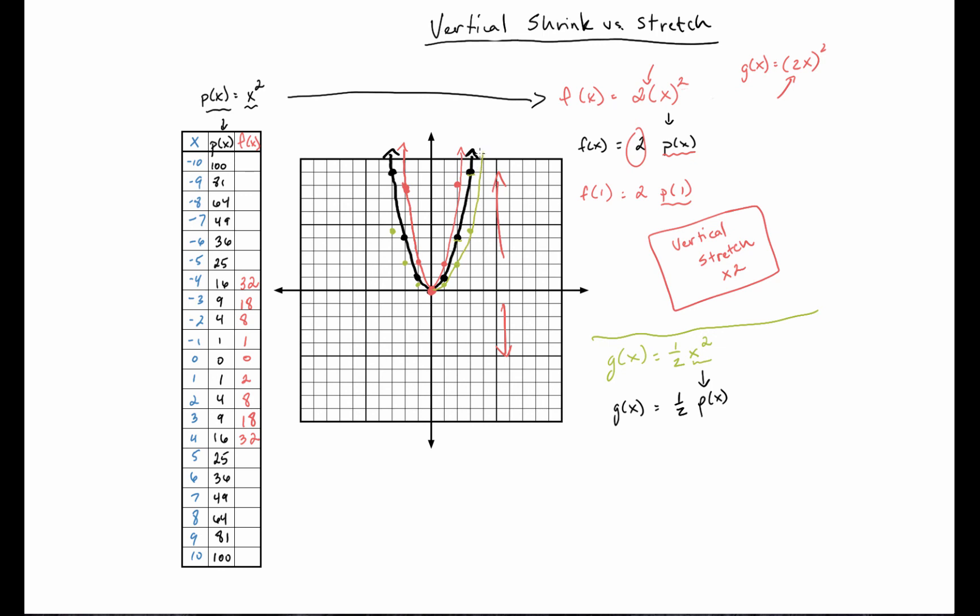And what we would say in this case is that our graph is in fact going up at half the speed it normally would. Or in other words, it's being vertically shrunk.